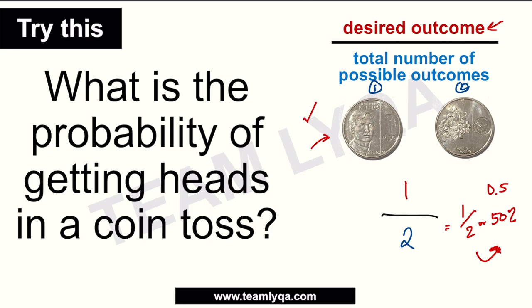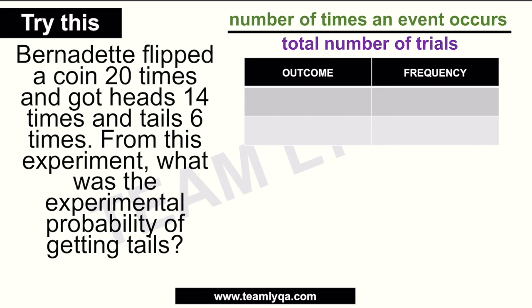Now, paano kung experimental probability ang pinag-uusapan? Pagdating sa experimental probability, meron talagang experiment na nangyari. Katulad ng tanong na ito: Bernadette flipped a coin 20 times and got heads 14 times and tails 6 times. From this experiment, what was the experimental probability of getting tails? May ginawa siyang experiment. And a quick shout out to Ate Bernadette who is a channel member — salamat sa inyong support. Ang madaling gawin dito would be to create a table — just listing down yung information. Sa left side ng table natin, meron nakalagay na outcome — ibig sabihin nun, ano yung mga posibleng kalalabasan sa bawat experiment. For example, ito yung heads, tapos ito naman yung tails.